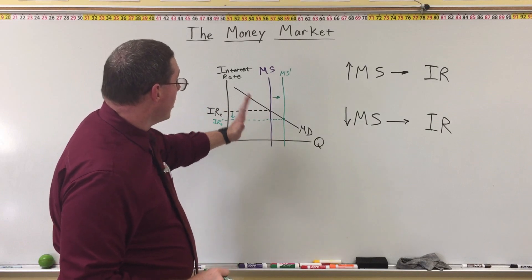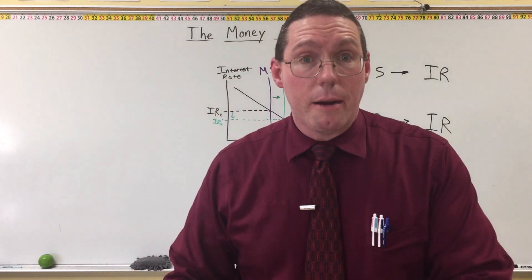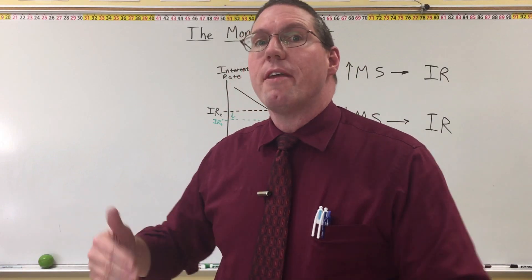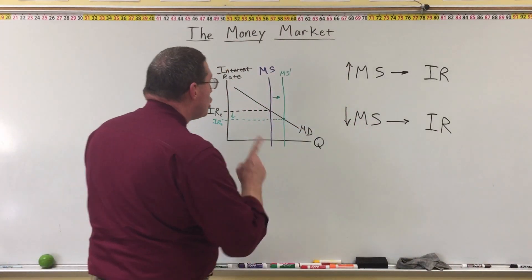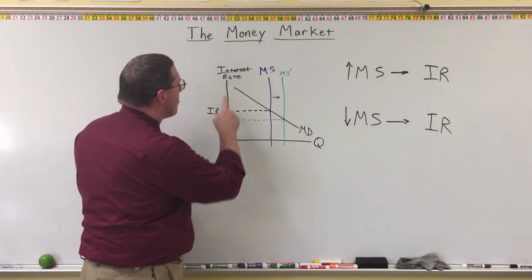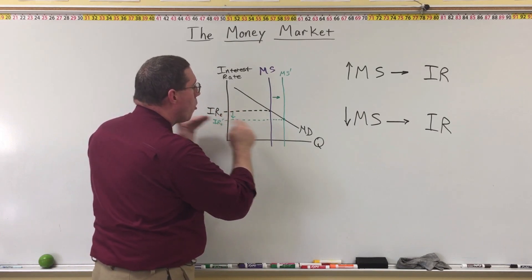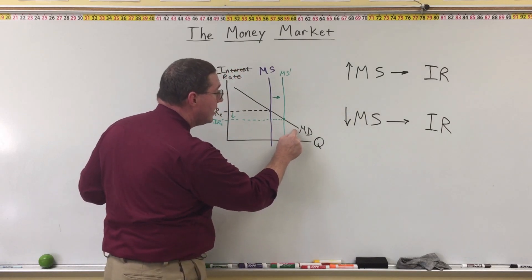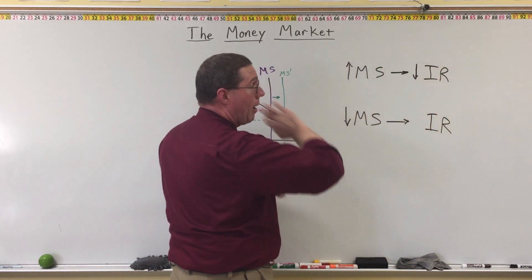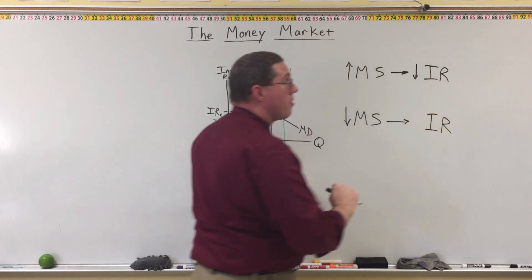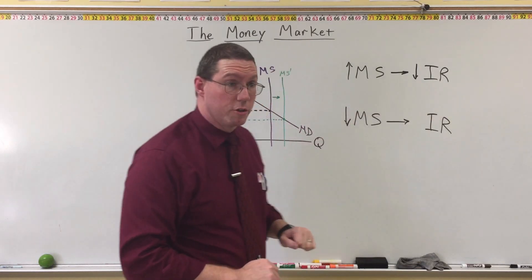When the money supply increases, there is more money in the economy for people to use. When there is more money readily available, it becomes cheaper for people to borrow it — that means a decrease in the price of money. Cheaper money is more likely to be borrowed, so there will be a larger quantity demanded of money because interest rates have gone down. The key takeaway: an increase in the money supply leads to a decrease in interest rates.